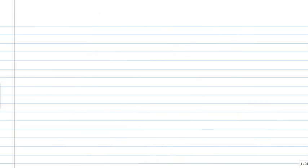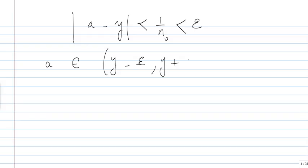So this will imply that the distance from Y to A is less than 1 over N_0, which is less than epsilon. In other words, A belongs to the interval Y minus epsilon, Y plus epsilon.